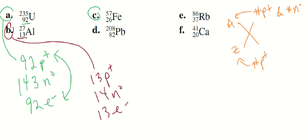Iron always has 26 protons. And this one has a mass of 57. So that is 31 neutrons. 26 electrons.